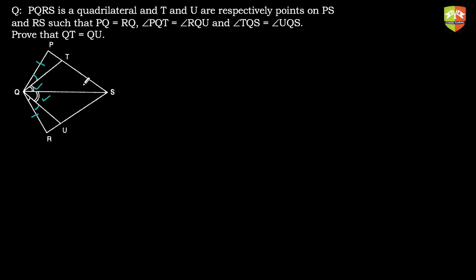It will be a little easier to work with triangles TQS and UQS. If we consider those to be congruent, there is a common side, and there is an angle already given equal. We can't use QT equals QU as given — that's what we need to prove. So we need to find another angle equal. If this angle equals this angle, then we have one pair of angles equal, a common side, and another pair of angles equal — by ASA, the two triangles will be congruent, and we can prove QT equals QU.